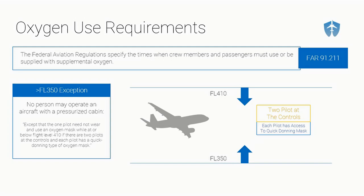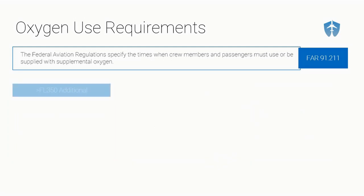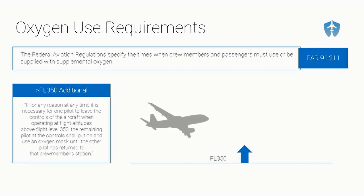A quick-donning mask is one you can grab with one hand, flip onto your face, and have oxygen within five seconds. So if both pilots have access to quick-donning masks and there are two pilots in the cockpit, they don't need to be wearing them while flying between FL350 and FL410. However, if one pilot leaves the controls — say, to use the restroom — the remaining pilot must put on and use the oxygen mask until the other pilot returns to the crew member station.